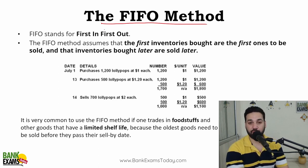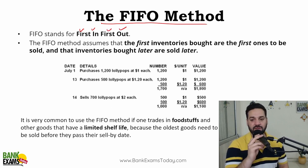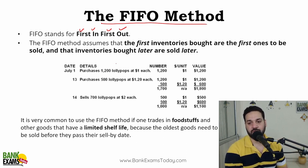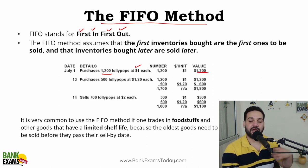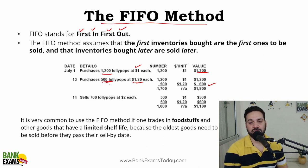We are going to start with the FIFO method. FIFO stands for first in, first out. Let's say you buy lollipops. You bought 1200 lollipops at the rate of $1 each, so the value is $1,200. Then after a few days, the price of lollipops shoots up by 20% — now it is $1.20 each. So 500 lollipops cost $600. Total cost of 1700 lollipops is $1,800.